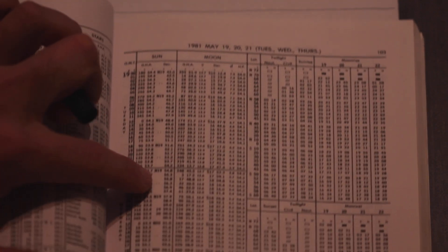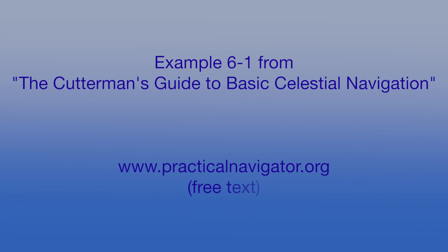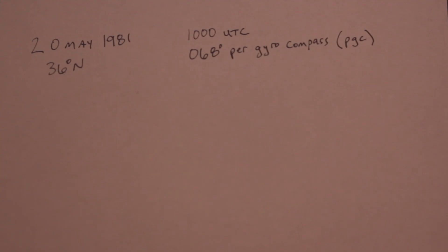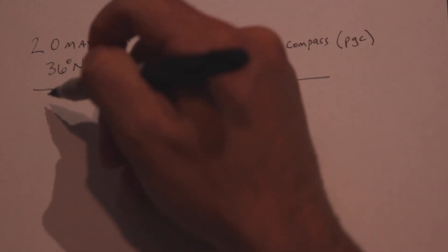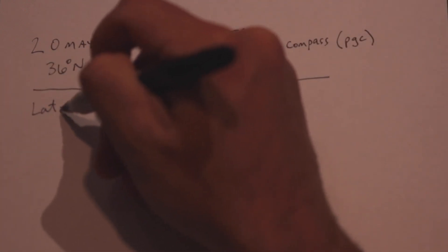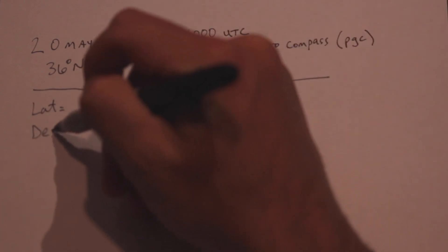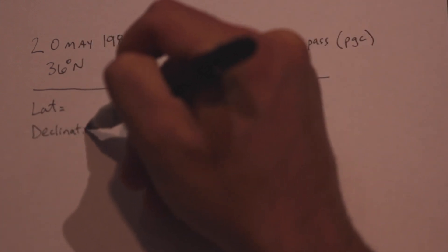Let's do an example — example 6-1 from the Cutterman's Guide to Basic Celestial Navigation. On the 20th of May you're departing Hampton Roads on patrol. You observe the rising sun at 1000 UTC bearing 068 degrees per gyro compass. Your latitude is 36 degrees north. What is the gyro error by amplitude of the sun? We know we have to get our latitude and the sun's declination in order to use Table 22 in Bowditch.